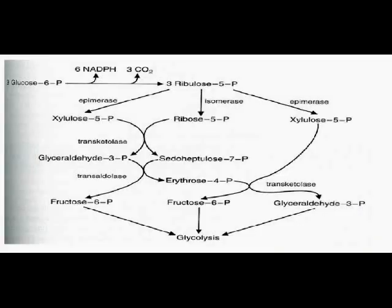The pentose phosphate pathway non-oxidative stage. The end product of the oxidative stage of PPP, which is ribulose-5-phosphate, is converted into xylulose-5-phosphate and ribose-5-phosphate. The enzymes epimerase and isomerase are needed to catalyze these reactions. The enzyme epimerase is needed to transform the ribulose-5-phosphate to xylulose-5-phosphate, and isomerase to ribose-5-phosphate.